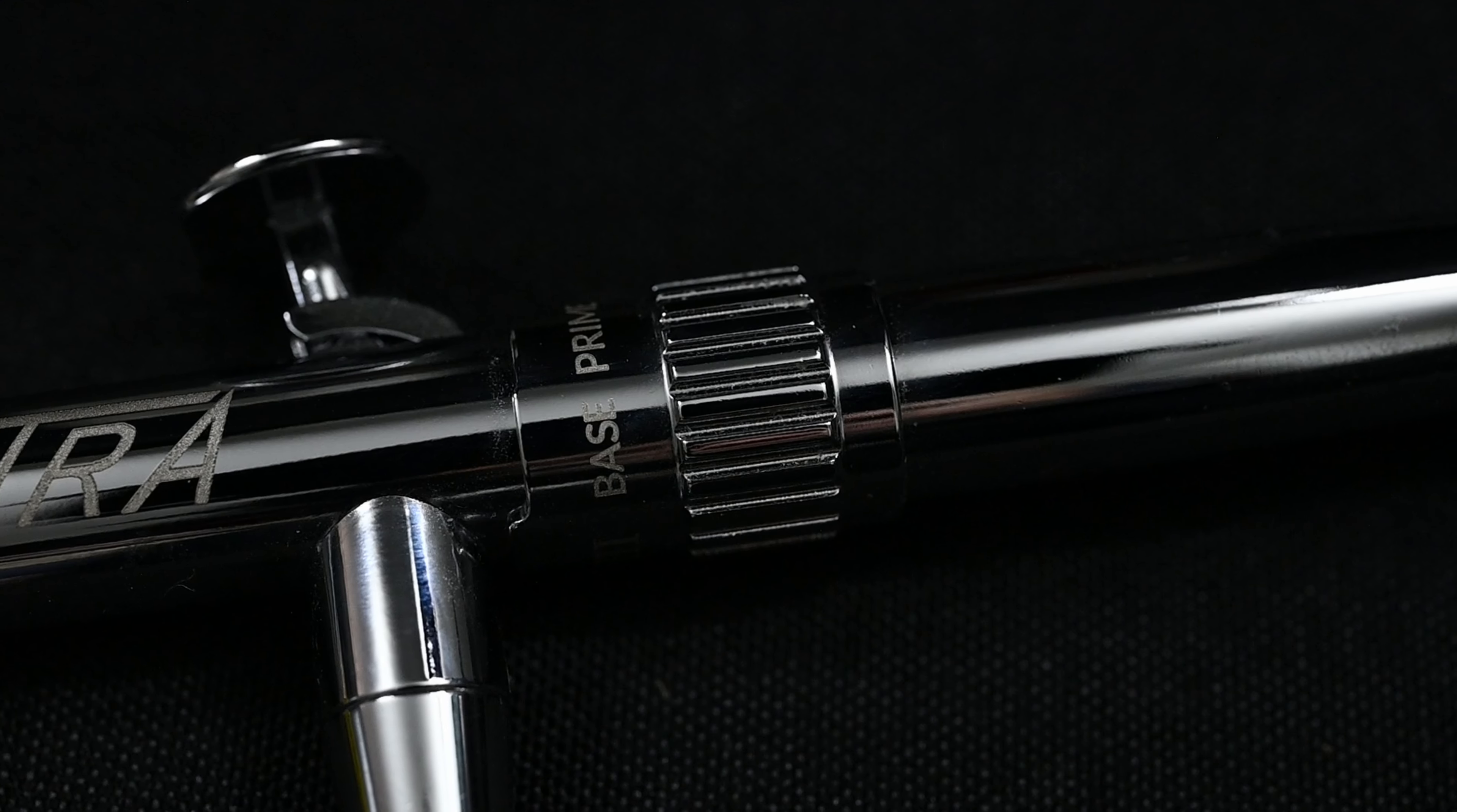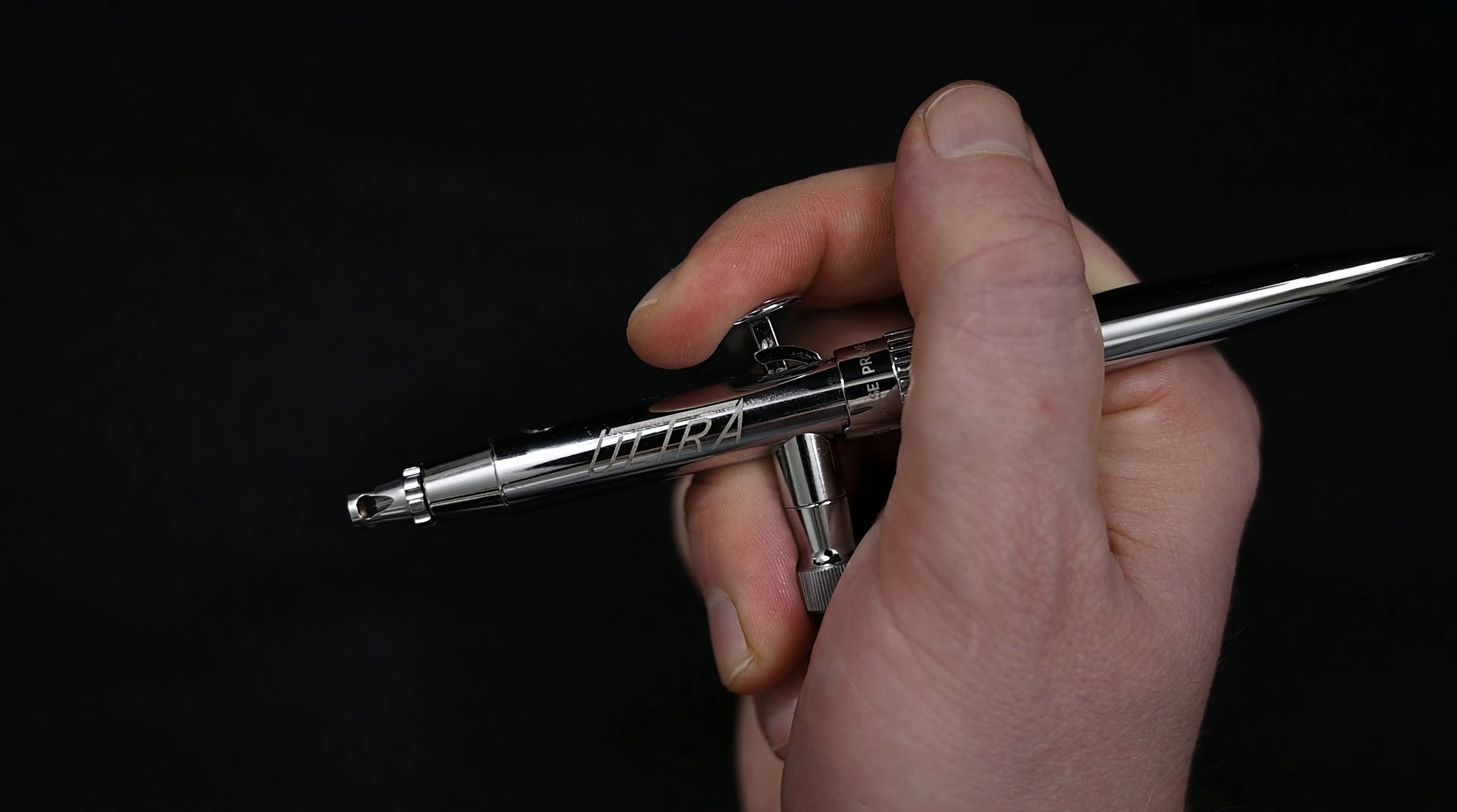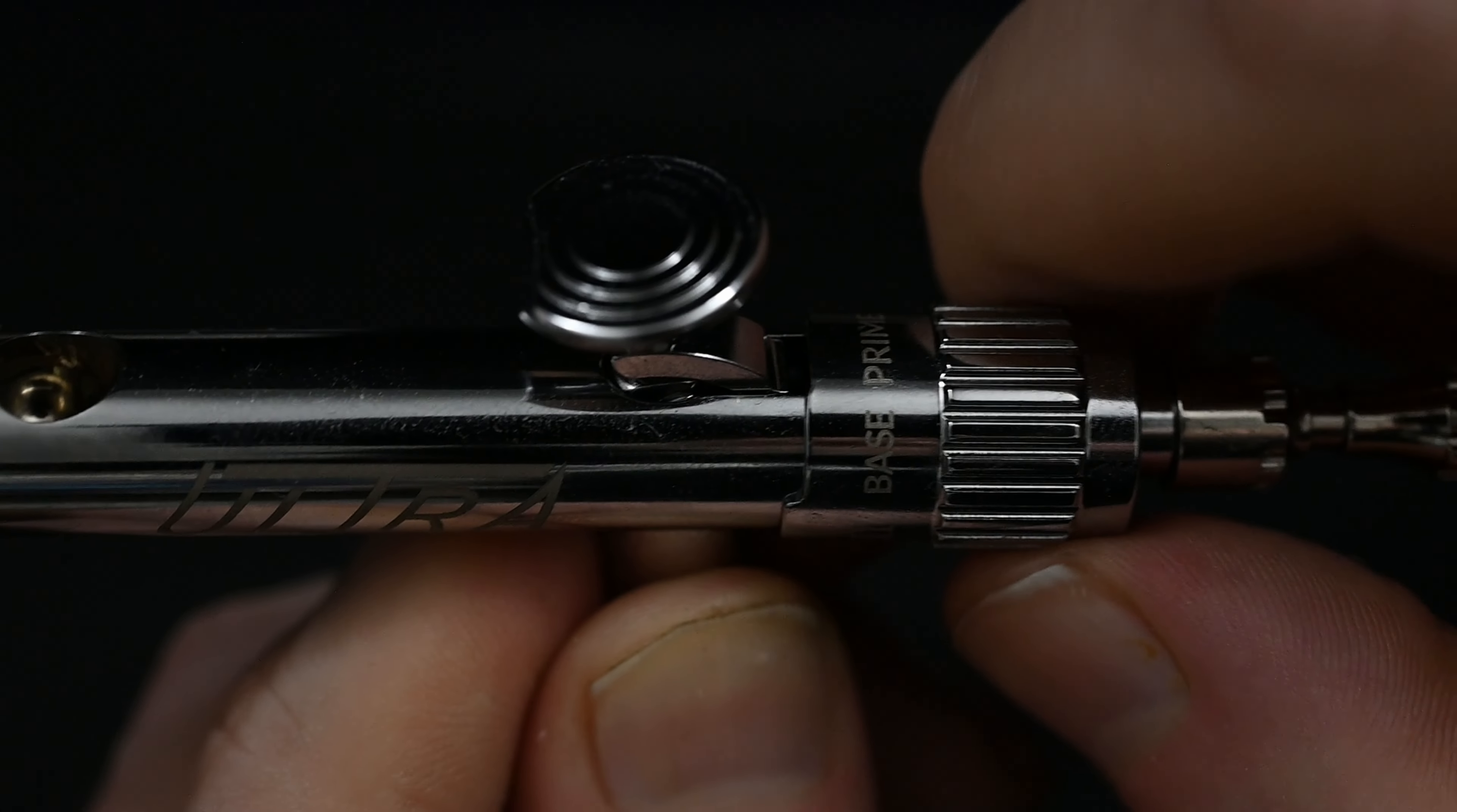Just behind the airbrush trigger is this collar that limits the distance that the needle can travel back. The farther that you pull back on an airbrush trigger, the more the needle retracts from the nozzle. So in other words, the more that you pull back, the more paint the airbrush is going to spray.